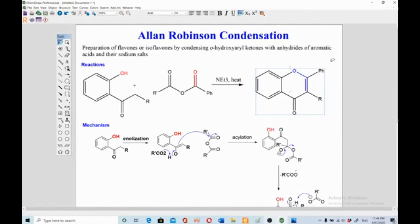Allan Robinson condensation is a method to prepare flavones or isoflavones by condensation of ortho-hydroxyl ketones with anhydrides of aromatic acids and their sodium salts. This is ortho-hydroxyl ketone—this is ketone and this is hydroxyl group or OH group at the ortho position, and this is anhydride.